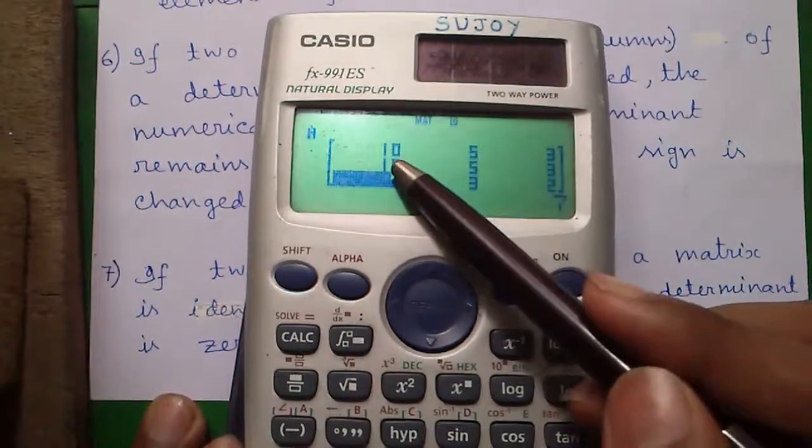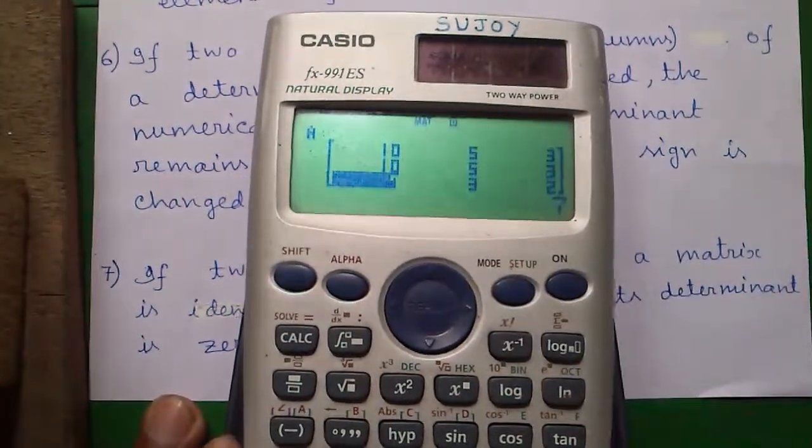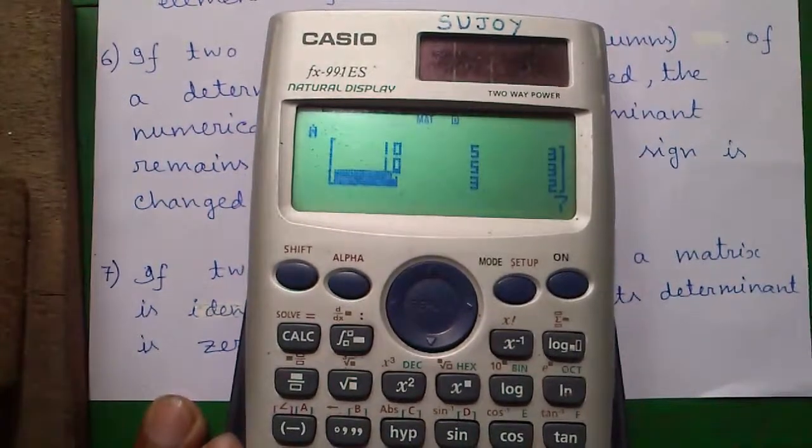So here we have two identical rows: row 1 is 10, 5, 3 and also row 2 is 10, 5, 3. So determinant should be equal to 0.